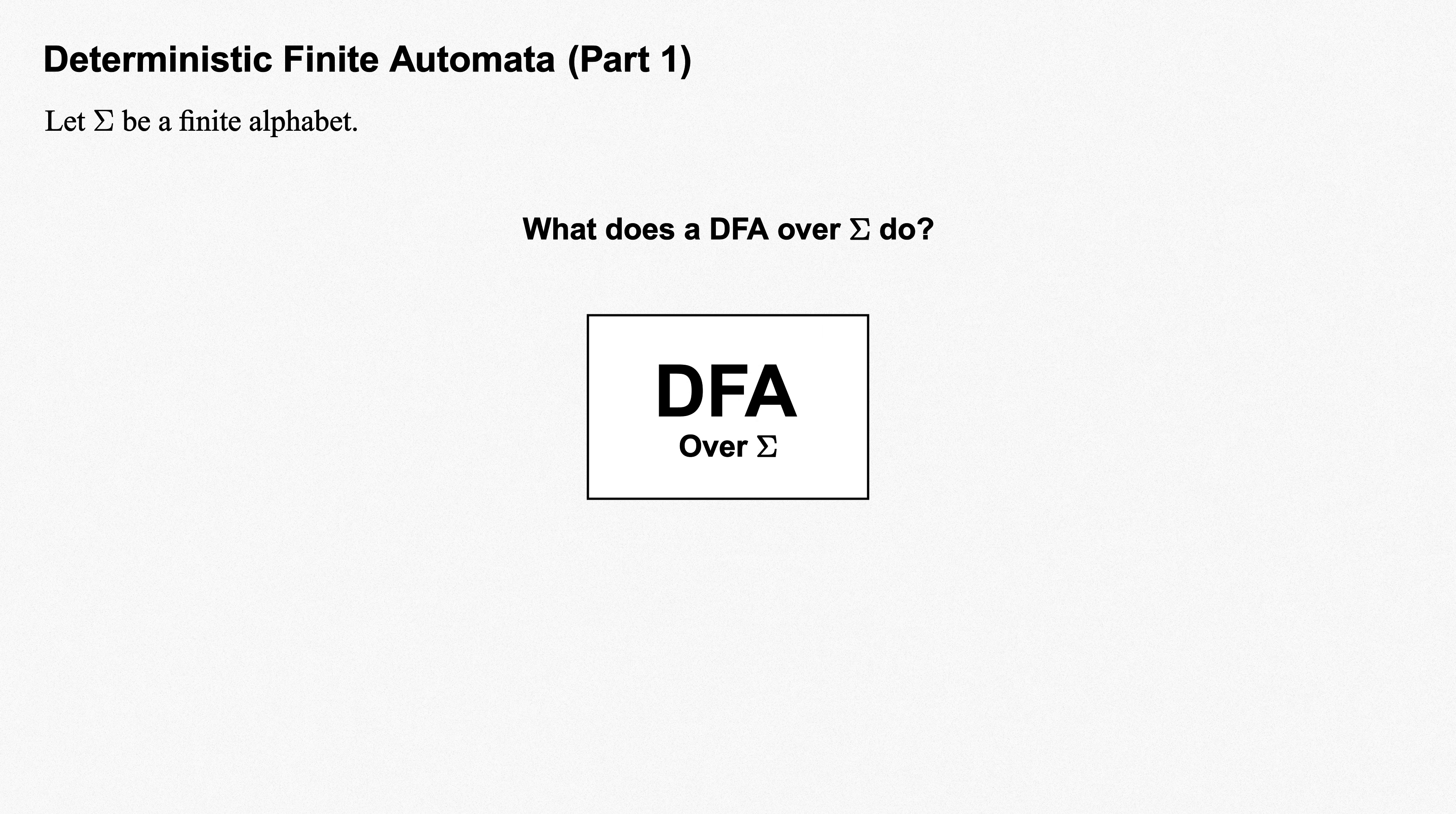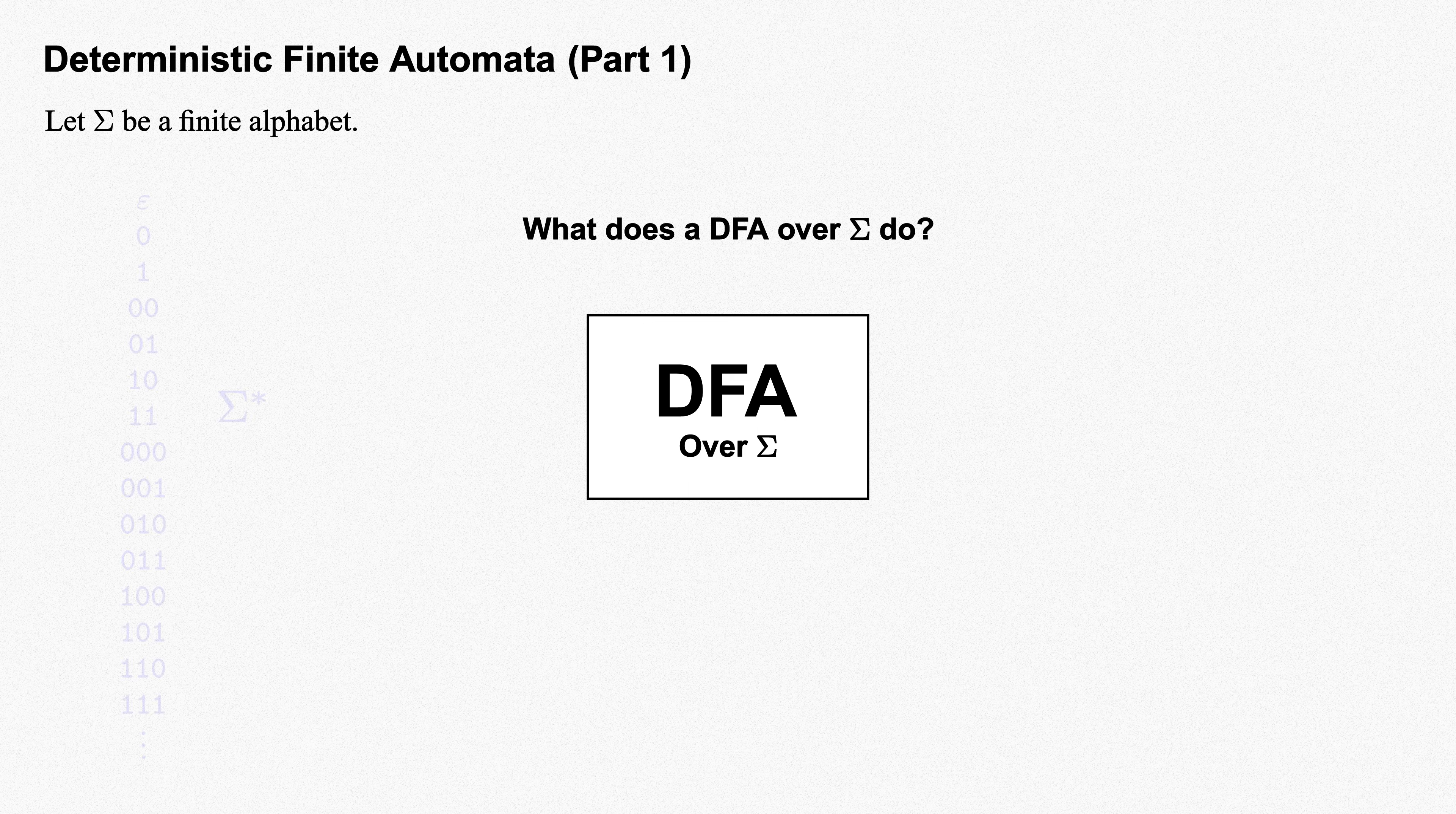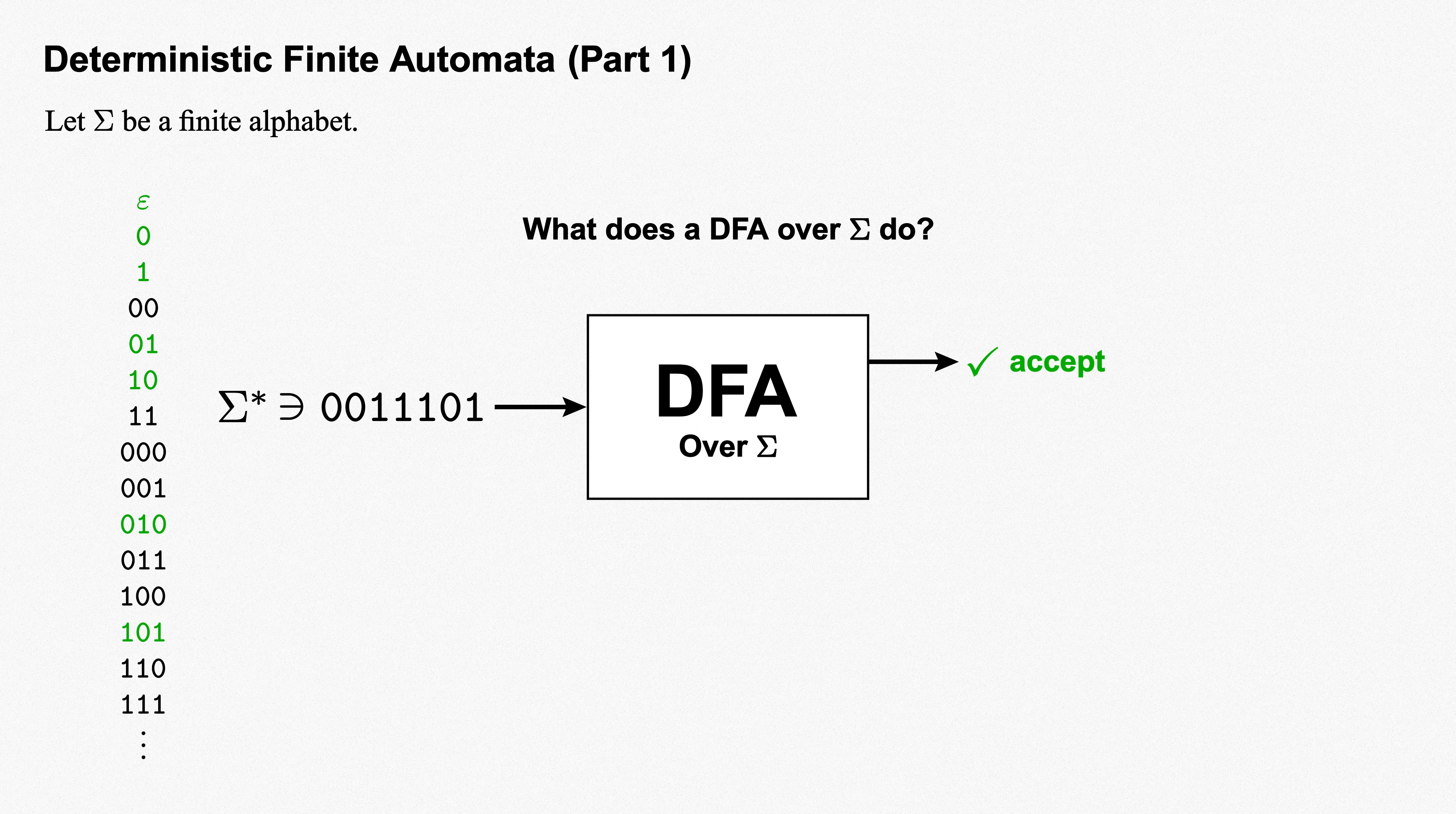The deterministic finite automaton, or DFA, provides our first and simplest model of machine computation. Let sigma be a finite alphabet. From the outside, what a DFA over sigma does is as follows: it takes as input any string in sigma star, and depending on the string it's given, it outputs either accept or reject.